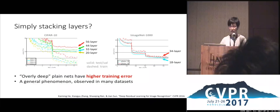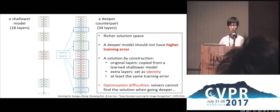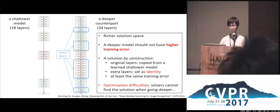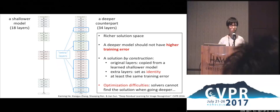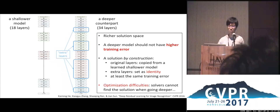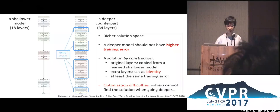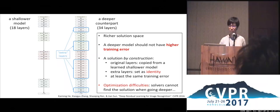The existence of this constructed solution indicates the deeper model should achieve at least the same training error as the shallower model. The degradation problem observed in experiments indicates some optimization difficulties in current solvers — they cannot find a solution when creating deeper and deeper plain networks. This is the motivation of the deep residual network. In a plain net, any two or more consecutive layers can be thought of as a small subnet. If H(x) is the desired mapping, instead of fitting H(x) directly, we fit a residual mapping F(x) and let the desired mapping be F(x) + x.